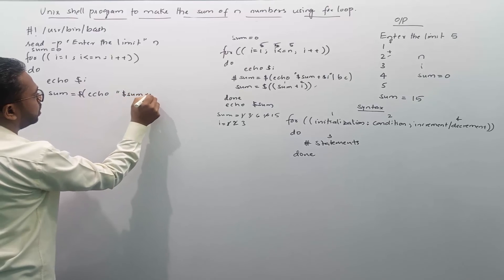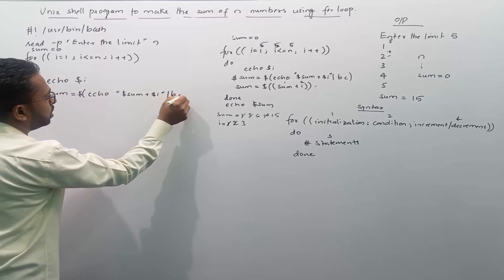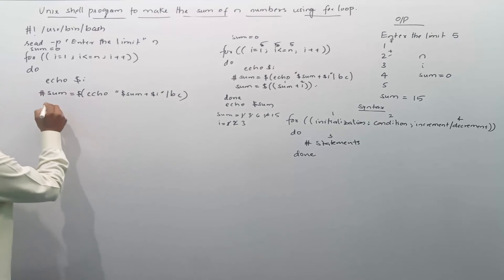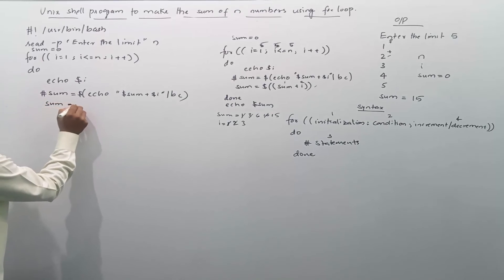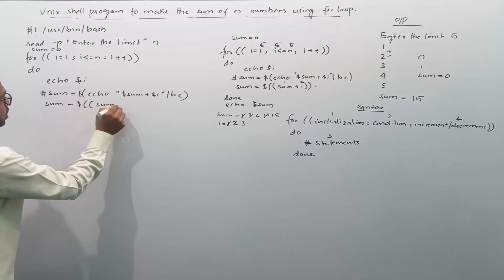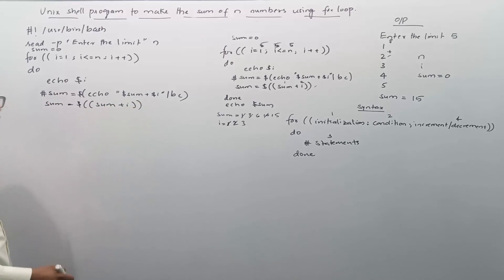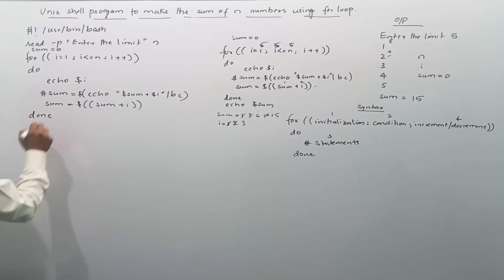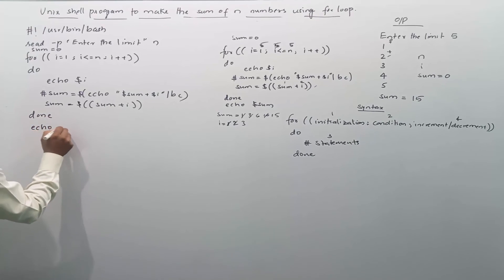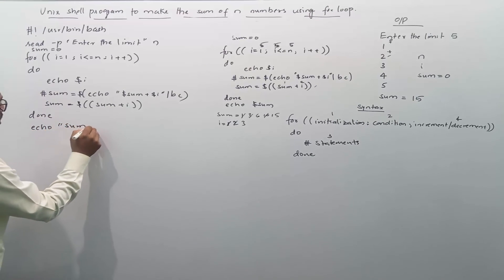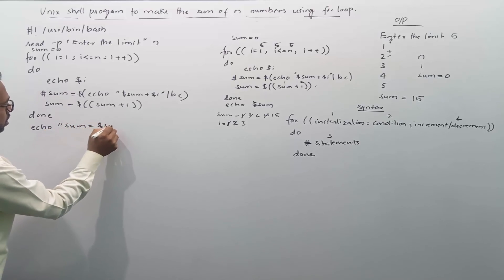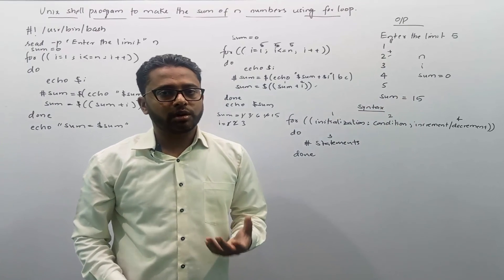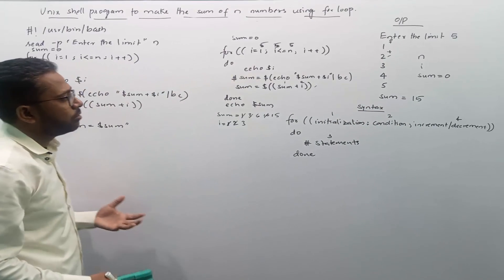We initialize sum=0 before the loop. Inside the loop we compute sum using either sum=$(echo "$sum + $i" | bc) or sum=$((sum + i)). After done, we print the result with: echo "sum is = $sum". We will get sum equals 15 as the output.